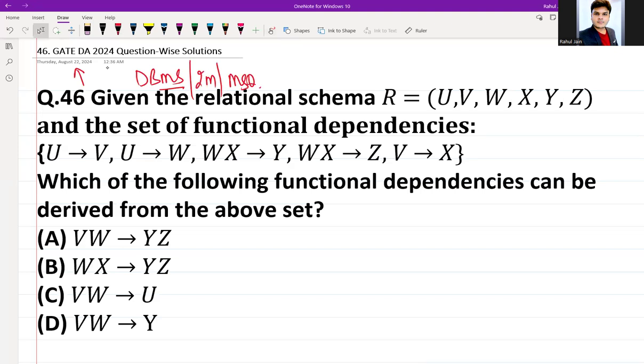The question is as follows: given the relational schema R over U, V, W, X, Y, Z and the set of functional dependencies are U → V, U → W, WX → Y, WX → Z, and V → X. Which of the following functional dependencies can be derived from the above set?